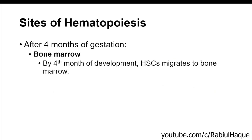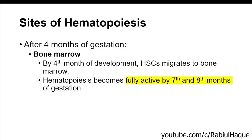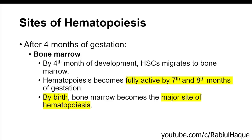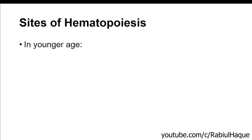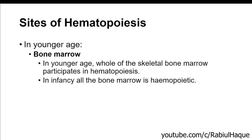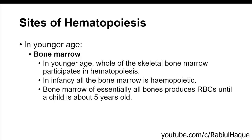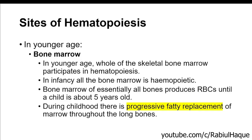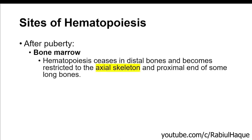After four months of gestation, bone marrow becomes the major site as hematopoietic stem cells migrate there. Bone marrow becomes fully active by the seventh and eighth months of gestation, and by birth it becomes the major site of hematopoiesis. In younger age, the whole skeletal bone marrow participates in hematopoiesis — in infants, all the bone marrow is hematopoietic. Bone marrow of essentially all bones produces red blood cells until a child is about five years old. Later, there is progressive fatty replacement of the bone marrow, and after puberty, hematopoiesis ceases in distal bones and becomes restricted to the axial skeleton and proximal ends of some long bones.